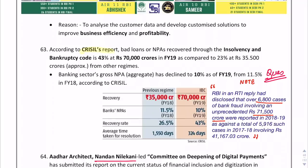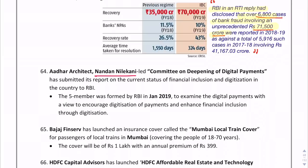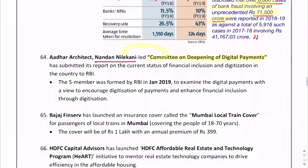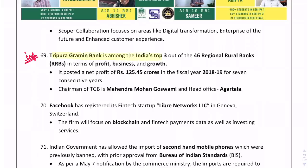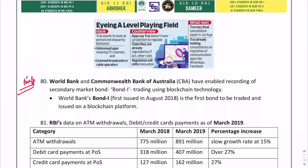RBI's RTI reply disclosed over 6,800 cases of bank fraud amounting to ₹71,500 crores. Nandan Nilekani — known as the Aadhaar Architect — is leading the Committee on Deepening of Digital Payments. Tripura Grameen Bank is among the top 3 regional rural banks in India in terms of profit, business, and growth. World Bank and Commonwealth Bank of Australia enabled recording of a secondary market bond on blockchain — Bond-i — the first bond issued and traded on a blockchain platform.